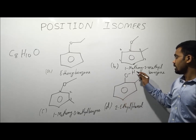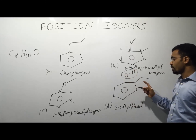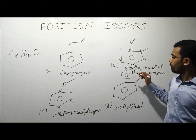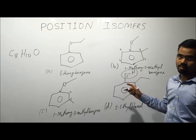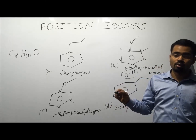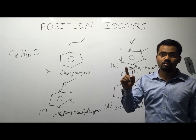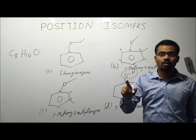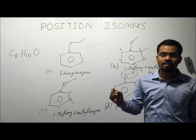Now for C and D: the nature of the functional group is changed because D is a phenol, so the nature of the functional group is different. Therefore, D is not considered a position isomer for A, B, and C. So the position isomers will be B and C only. In conclusion, for position isomers, molecules must have the same nature of functional group, the same nature of chain, and only a different position of the functional group, multiple bond, or substituent group. Thanks for watching my video.